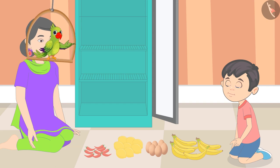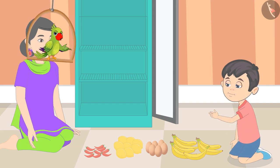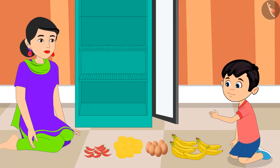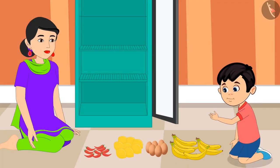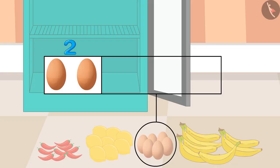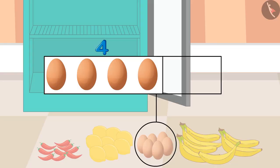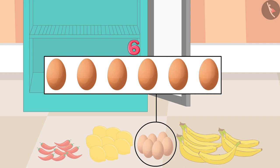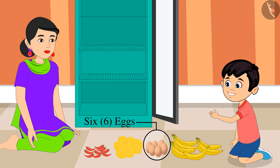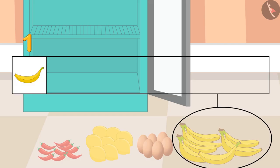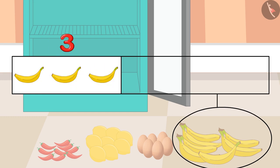Okay mom! One, two, three, four, five, and six — these are six eggs. One, two, three, four, five, six, and seven — these are seven bananas.